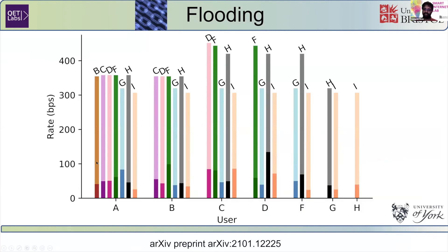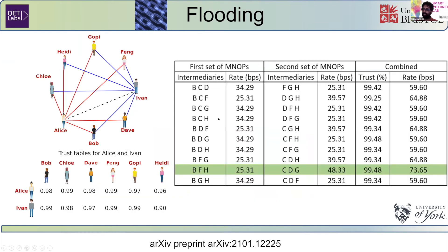We can show that we have a significant increase in key rate. In each of these bars, the darker line is the amount of key generated between Alice, Bob, Chloe, Dave, and so on without flooding protocols, and the lighter line at the top is that with flooding protocols. Not only can we use flooding protocols to improve key rate, we can also combine these flooding protocols to achieve better security.